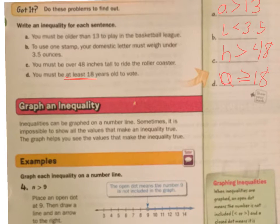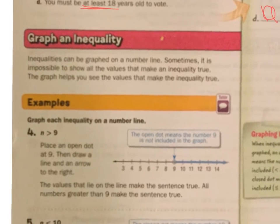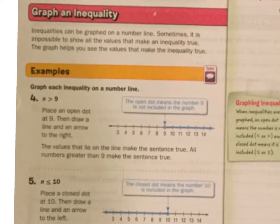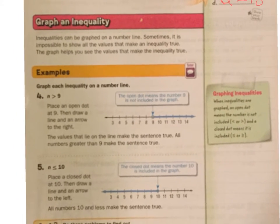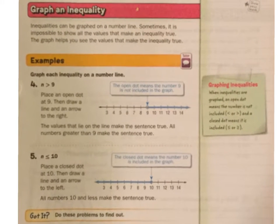Okay, that's how you write an inequality. Now let's talk about graphing it. Inequalities can be graphed on a number line. Sometimes it's impossible to show all the values that make an inequality true because there could be an infinite number of them. The graph helps you to see the values that make the inequality true.